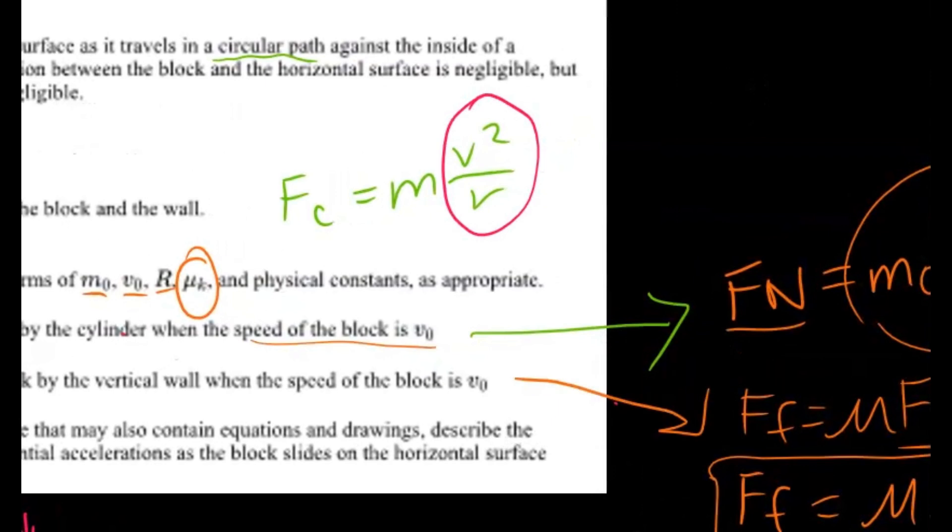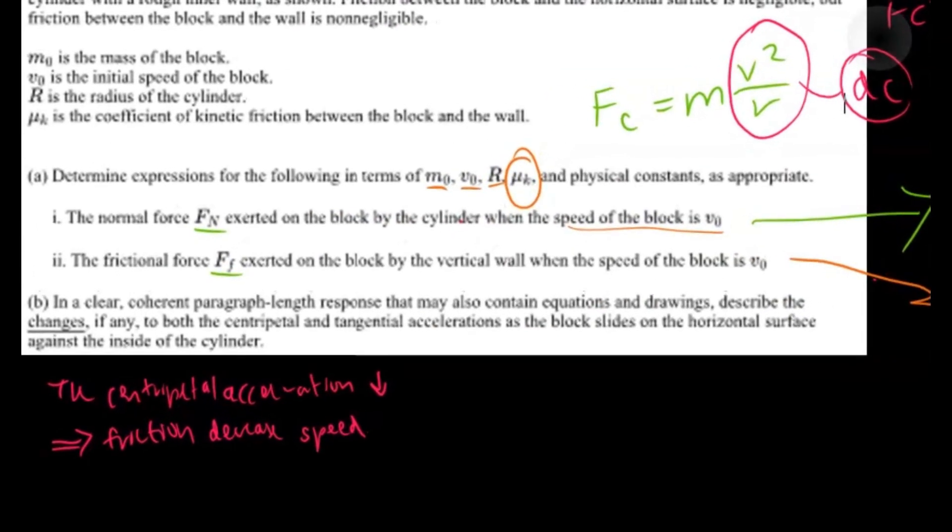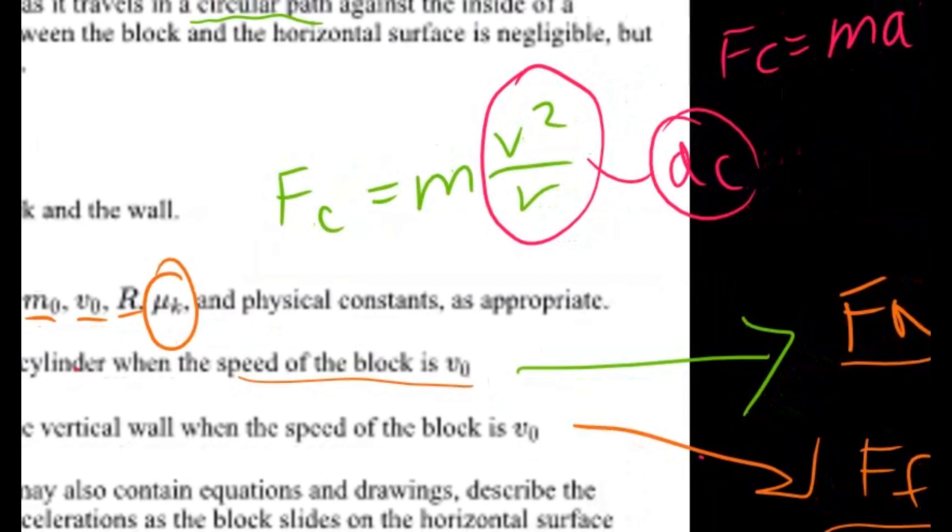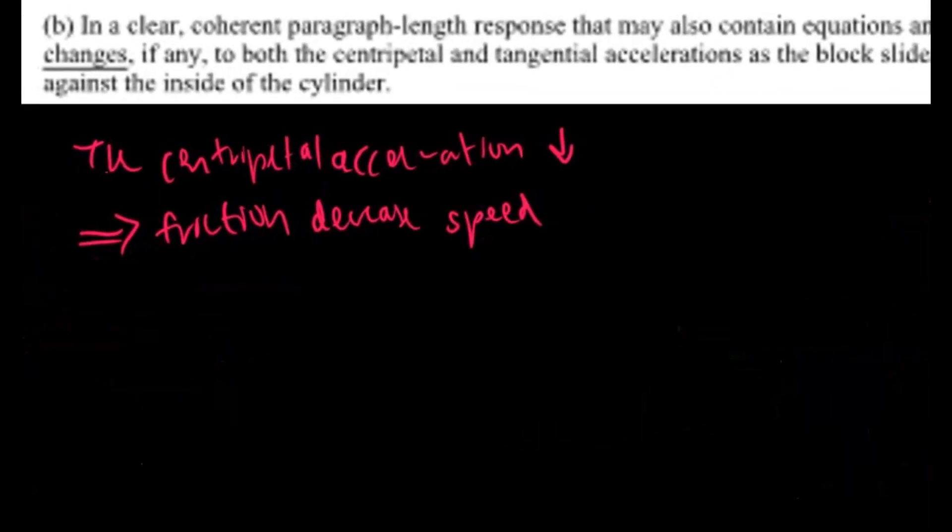And so if you look at our equation up here, this is the centripetal acceleration. Because centripetal acceleration is written as m times ac, right? So this is our ac part. This is the centripetal acceleration part that we're looking at. So if there is friction present and decreases the speed, right? What you'll find is that if this v value decreases because it's on the top, then your centripetal acceleration will decrease given that r is constant.